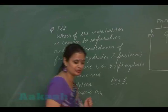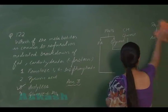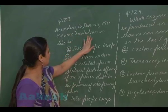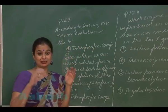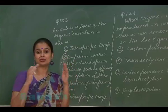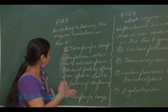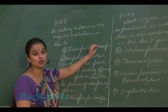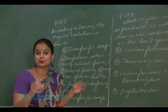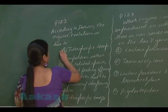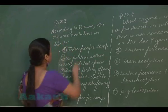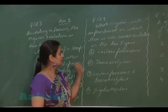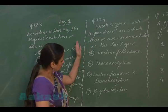Question 123: According to Darwin, organic evolution is due to what? Darwin talked about survival of the fittest and stated that the potent force for organic evolution is interspecific competition — that is, competition between different species. So the right answer for question 123 is option 1.